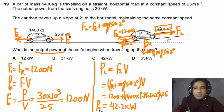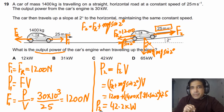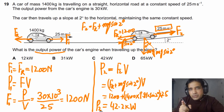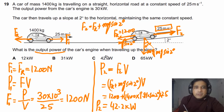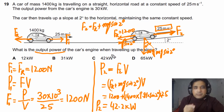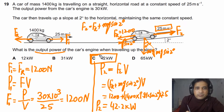This is the best approach: consider all forces acting on the car, multiply by the speed, and calculate the output power. The answer for this question is 42.2 kilowatts — answer C.